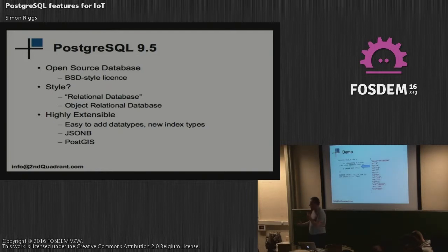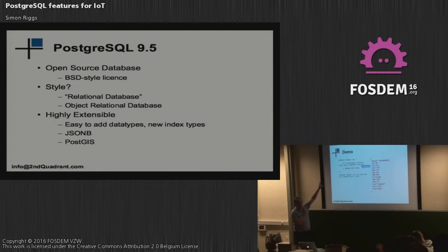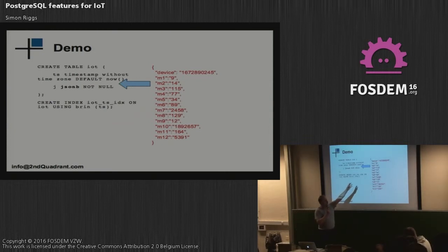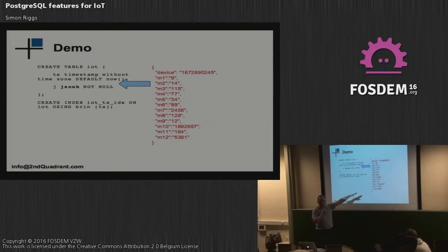I was asked to do a demo, so I'm going to do a demo just on my laptop. I want to give you a very simple database to think about. It's a single table with two columns: one called TS, which is a timestamp, and another column called J, which is of type JSONB. Into that simple table I've got a pretty simple blob of JSON, which has a field called device with a number, and then twelve things I'm calling measures — but obviously they could be temperature, position, air pressure, or anything you wanted.